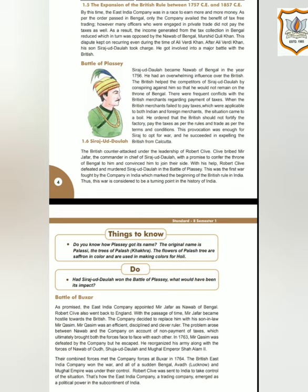The next topic is the Battle of Plassey. Siraj ud-Daulah became Nawab of Bengal in the year 1756. He had an overwhelming influence over the British. The British helped his competitor by conspiring against him so that he would not remain on the throne of Bengal. When British merchants failed to pay taxes — which were applicable to both Indians and foreign merchants — the situation came to a boil. He ordered that the British should not fortify the factory, should pay taxes as per the rules, and trade as per the terms and conditions. This provocation was enough for Siraj to opt for war, and he succeeded in expelling the British from Calcutta.